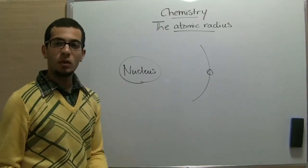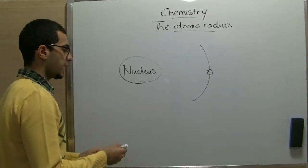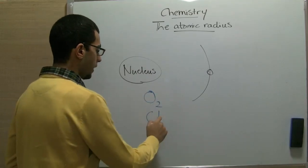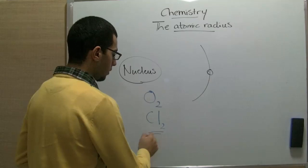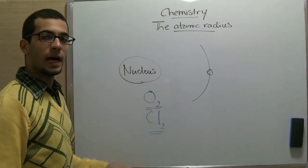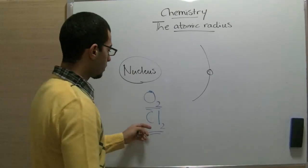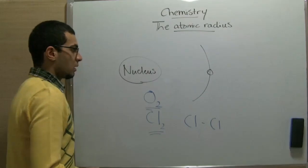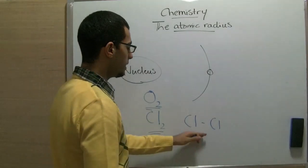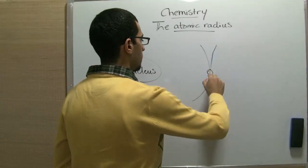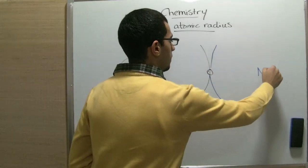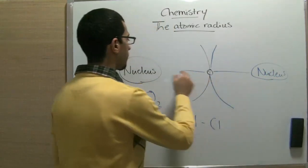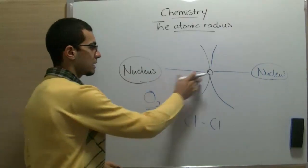What we do instead is use something else. For example, we have gases like oxygen and chlorine. We can notice that these molecules each contain two atoms of the same element — chlorine contains two chlorine atoms. In such a molecule, both atoms have the same distance from the nucleus, but we still cannot measure that distance directly.